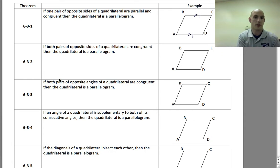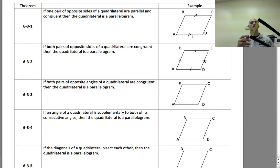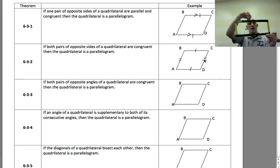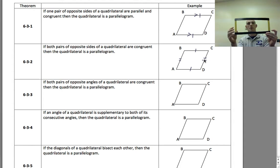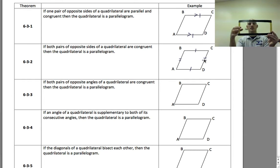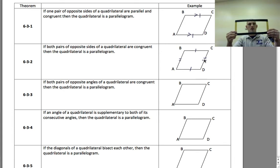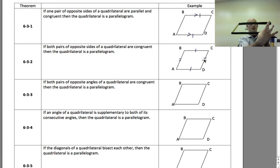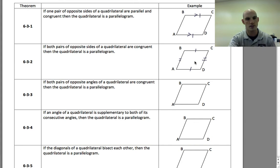If both pairs of opposite sides of a quadrilateral are congruent, then the quadrilateral is a parallelogram. If we think about a rectangle, the two yellow sides are the same and the two black sides are also the same. No matter how I move it, the black ones stay the same distance apart because the two yellow sides are the same distance. This is a visual to give you an idea of what these theorems are about.